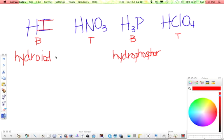And then the last thing you add is the suffix ic, and then the word acid. So HI is hydroiodic acid. Add our ic and the word acid, and we have hydrophosphoric acid. Again, this doesn't really exist, so just run with it.